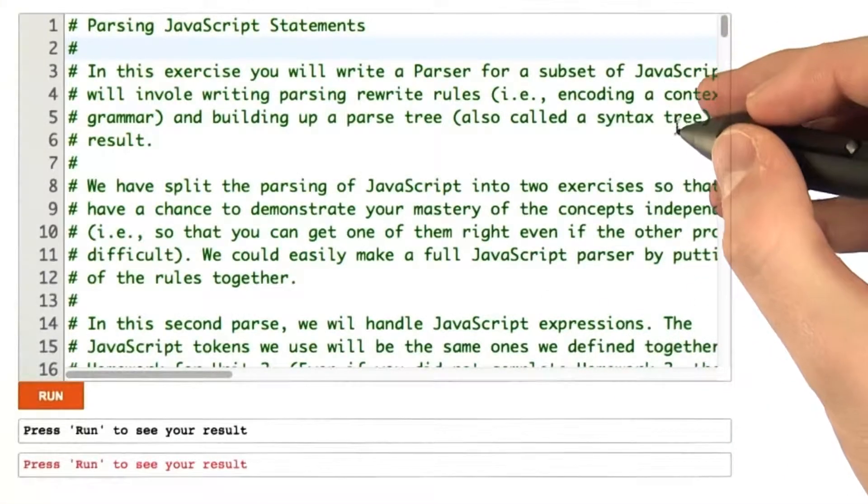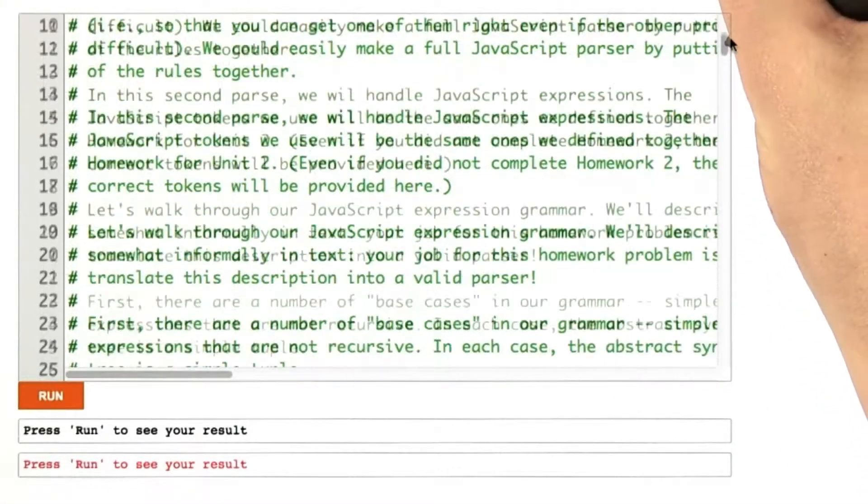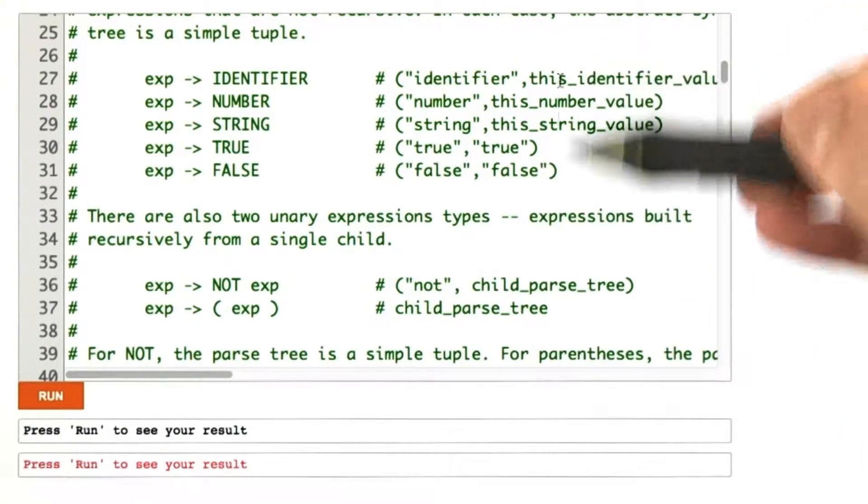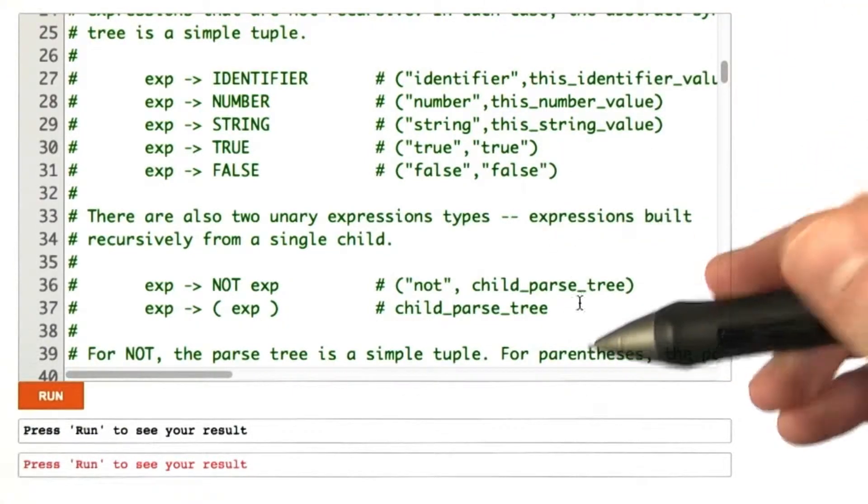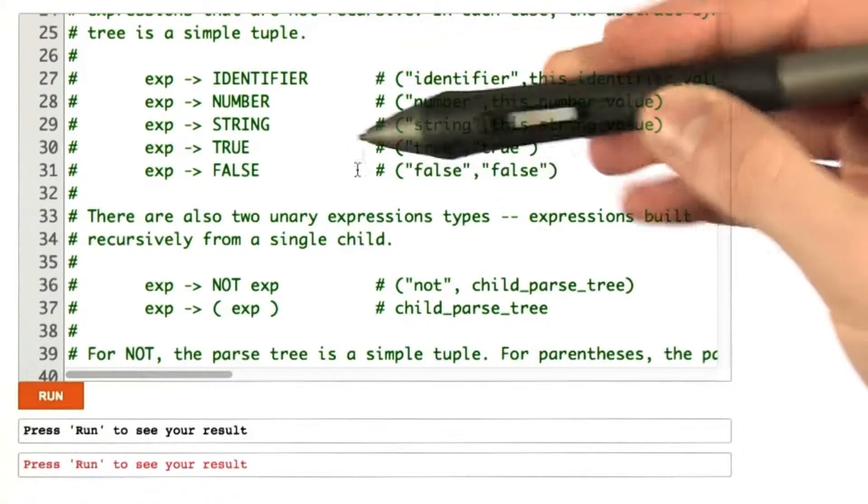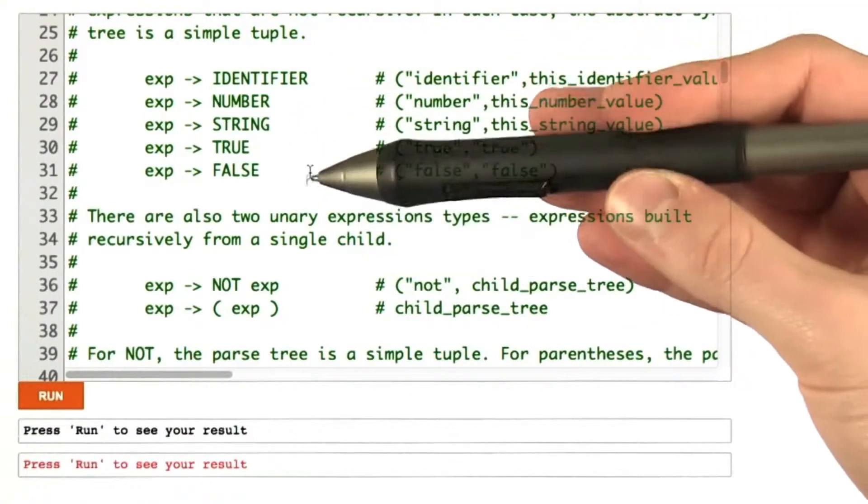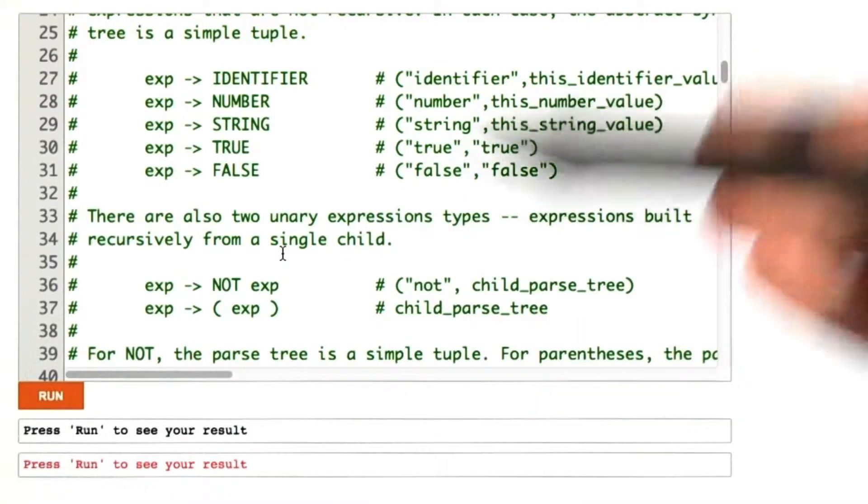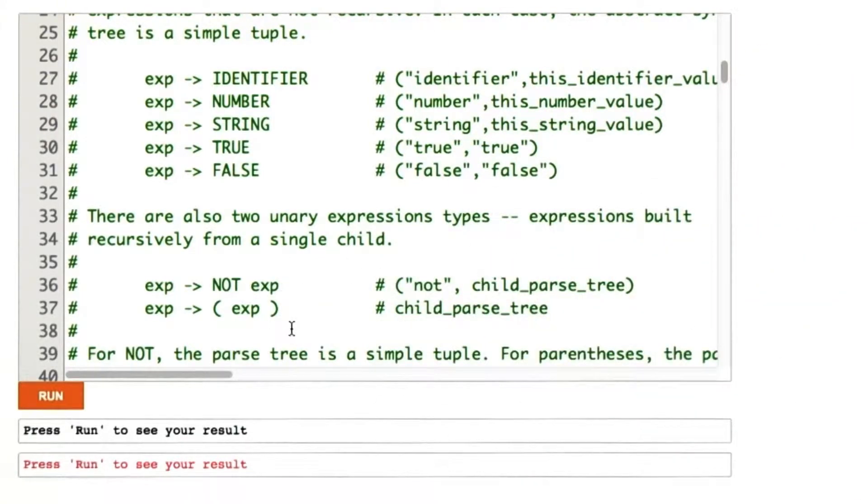So here we have the supplied code for the problem, and if we look closely, we see that almost all the parse rules are enumerated to exactly what they should be. We have identifier, numbers, strings, true and false, how to handle a not keyword, do the opposite, and then parentheses for expressions.